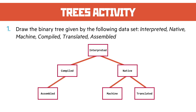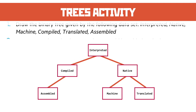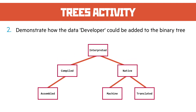There's our binary tree. Question 2: demonstrate how the node 'developer' could be added. Developer would be checked at the root node — it's less than interpreted because it's earlier in the alphabet, so we get to compiled. It's greater than compiled, so there's an empty branch there and we just insert it at that point. So we've got a nice balanced binary tree now.